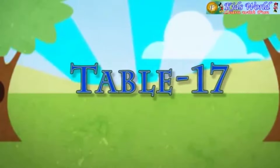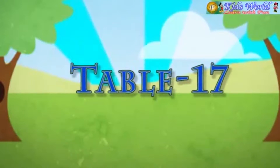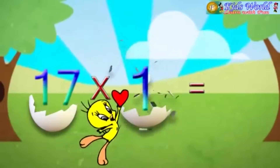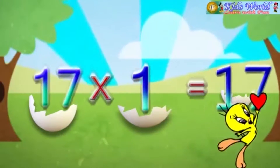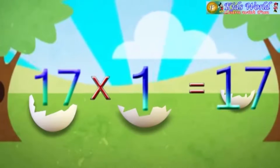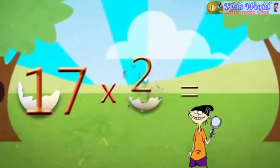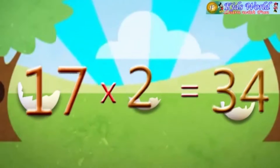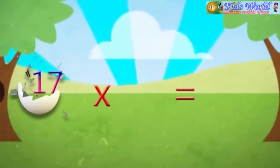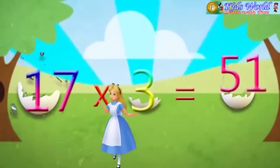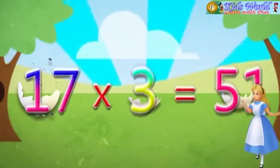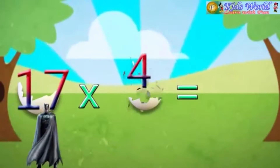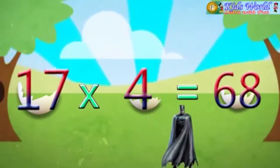Table 17. 17 into 1 is equal to 17. 17 into 2 is equal to 34. 17 into 3 is equal to 51. 17 into 4 is equal to 68.